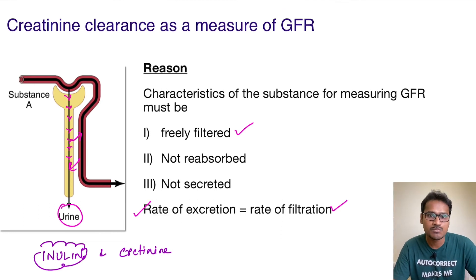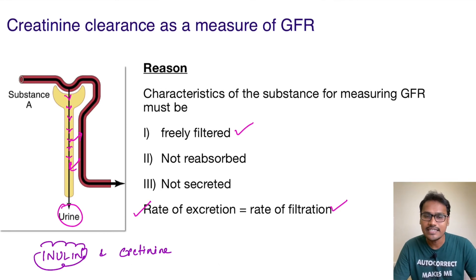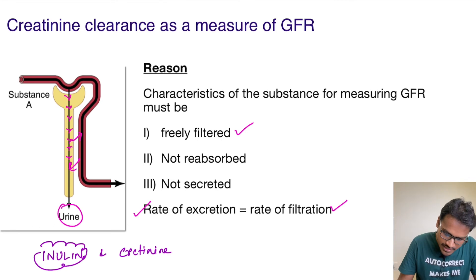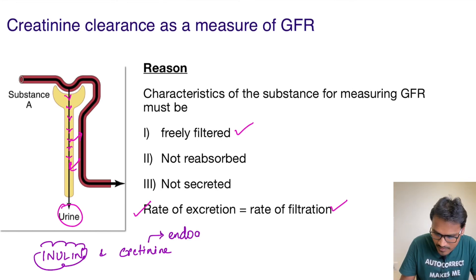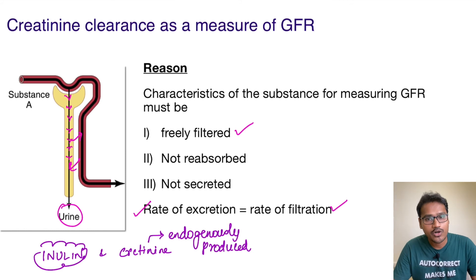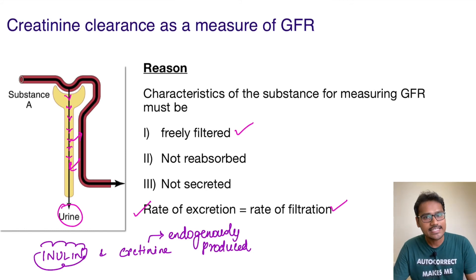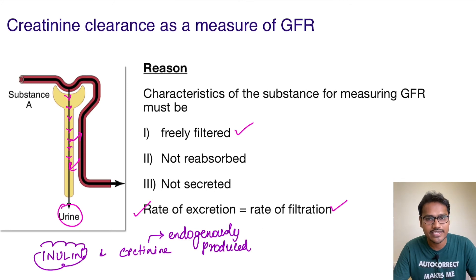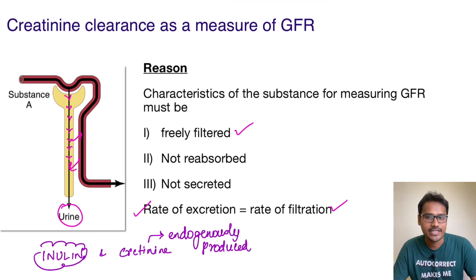Even though inulin is more accurate than creatinine clearance, creatinine is still preferred. Why? Because creatinine is endogenously produced — it is the byproduct that is produced by the body itself. Its clearance is very much similar to that of inulin clearance, and that's why creatinine is preferred over inulin because of its endogenous production.